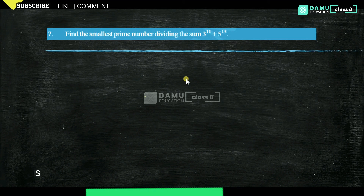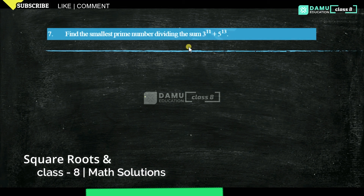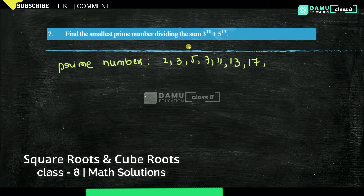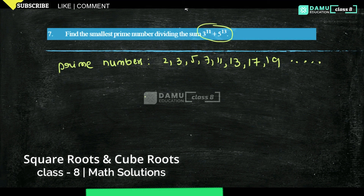Hello viewers, thanks for watching. In this module we are going to discuss our last question in this exercise: find the smallest prime number dividing the sum 3^11 + 5^13. We need to consider the prime numbers: 2, 3, 5, 7, 11, 13, 17, 19, and so on. To divide 3^11 + 5^13, we should know divisibility rules.